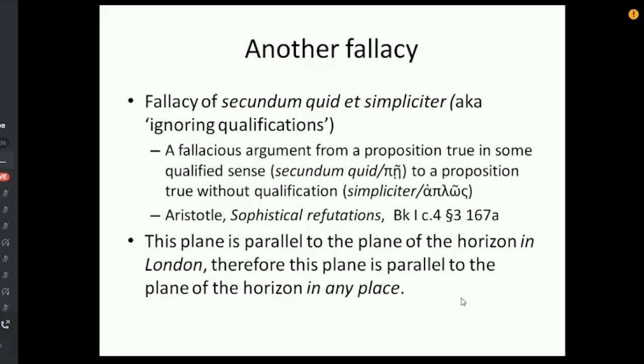There's actually another fallacy embedded in this. You can count over a few fallacies. I haven't given them all. It's called the fallacy of secundum quid et simpliciter, which is Latin for arguing from a proposition that is true in some qualified sense, secundum quid, to a proposition that is true without qualification, or absolutely true, simpliciter. Aristotle's Sophistical Refutations. This is where Aristotle lays out all the standard fallacies, which is still just still referred to today. Book one, chapter four, section three. So, this plane is parallel to the plane of the horizon in London. So you're qualifying it. It's the plane of the horizon in London. You cannot conclude from that that this plane is parallel to the plane of the horizon in any place. It may be parallel to the plane of the horizon in London. That does not mean it's parallel to the plane of the horizon in New York.